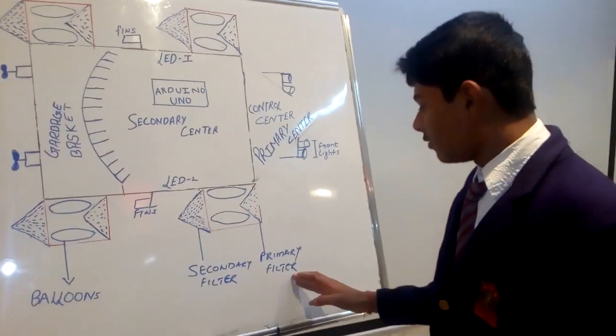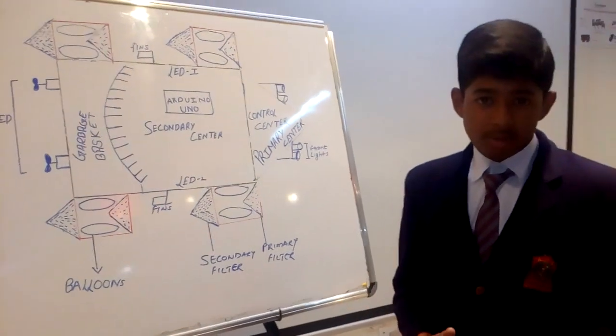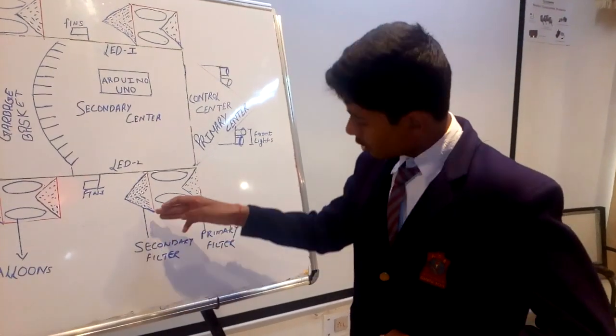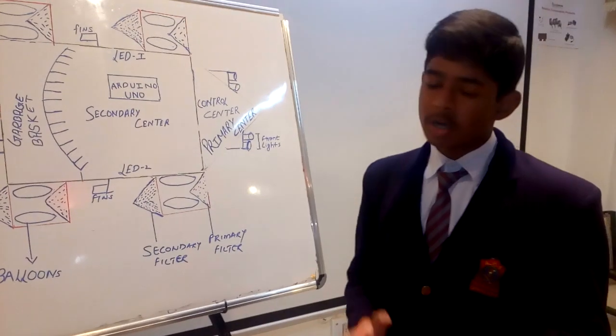The work of the primary filter is to collect large pieces of garbage, and the work of the secondary filter is to collect small pieces of garbage.